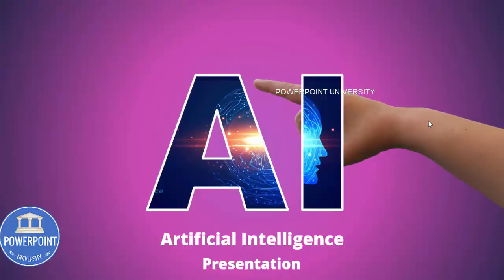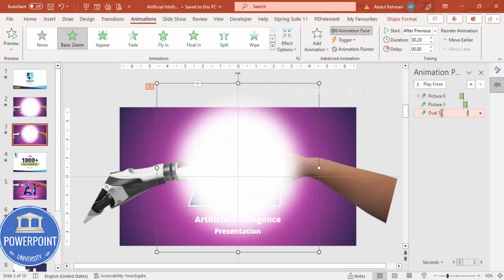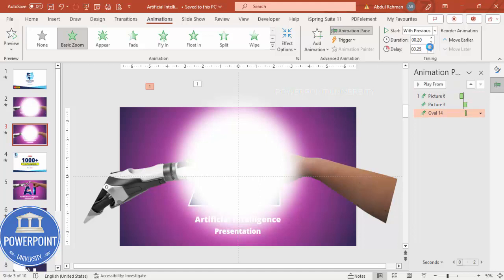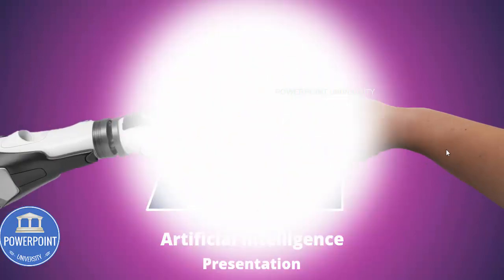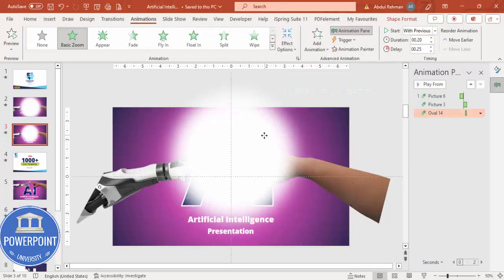When this hand and this hand comes, this particular light appears. Instead of After Previous, I'm going to make it With Previous but add a little bit of delay. Let me just play it now — okay, so let me move it more up.